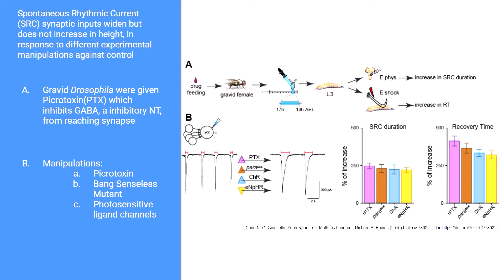In part B of this graph, you can see recordings of spontaneous rhythmic currents, also known as SRCs, which are measured in picoamps. The recordings of the SRCs are coming from the anterior corner cell, also known as the ACC motor neuron, from the Drosophila larvae. The graph on the left is the control, and the graph on the right shows four independent experiments that produced the same results.